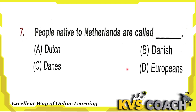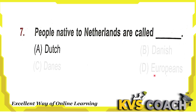Next question: people native to Netherlands are called — option A is Dutch. Yes, Dutch are people native to Netherlands. Option B is Danish — native to Denmark. Option C is Danes — also native to Denmark. Option D is Europeans — native to Europe. So the right answer is option A: Dutch are the people native to Netherlands.